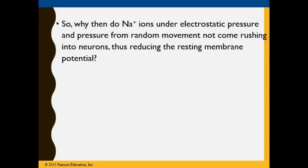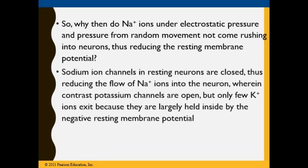If sodium ions entered freely, they would reduce the resting membrane potential. However, sodium ion channels in resting neurons are closed, reducing the flow of sodium ions into the neuron. In contrast, potassium channels are open, but only few potassium ions exit because they are largely held inside by the negative resting membrane potential — they are positively charged and attracted inward.